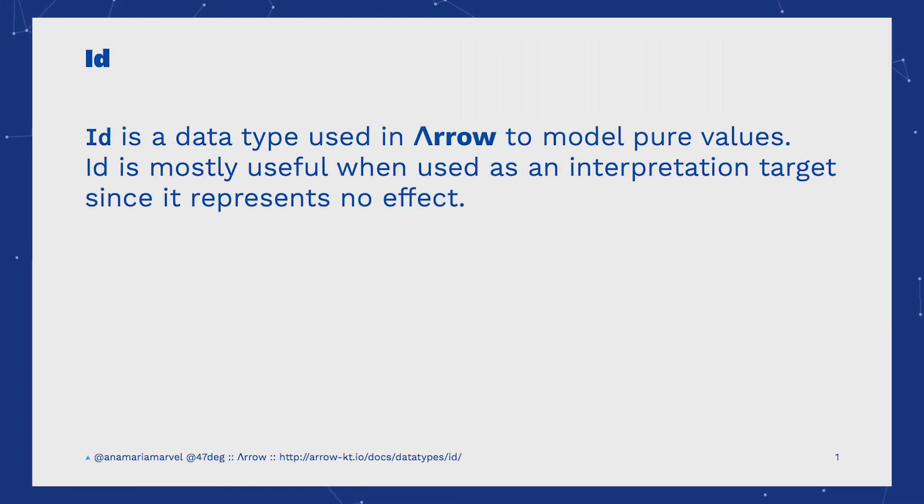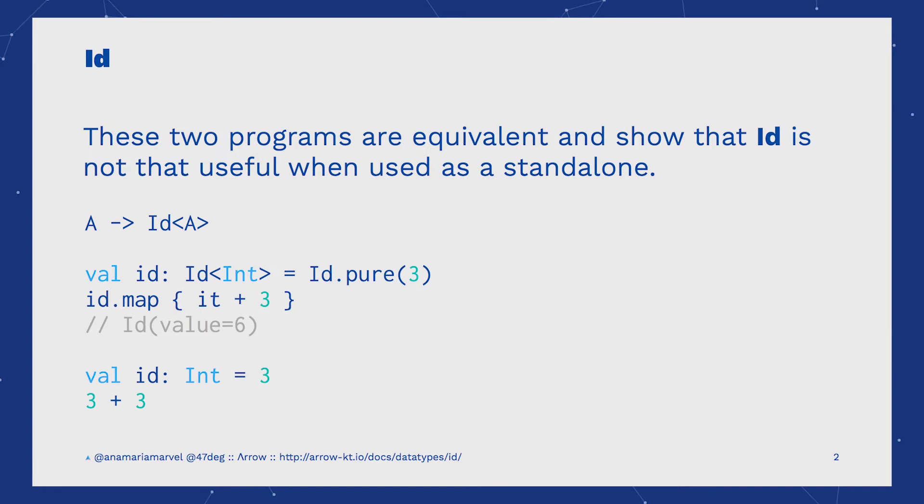ID is a data type used in Arrow to model pure values. The identity monad can be seen as the ambient monad that encodes the effects of having no effect. It's ambient in the sense that plain pure values are values of ID. That is to say that the type ID is just a synonym for A.